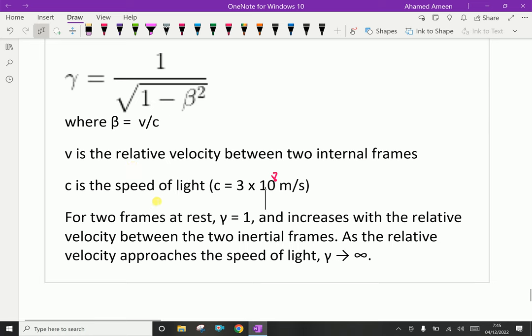As the speed increases with the relative velocity between the two inertial frames, as the relative velocity approaches the speed of light, gamma equals infinity. Suppose v by c is very near to one. Very near to one means one minus one is zero, square root of zero is zero, one over zero is not possible, so it becomes infinity.